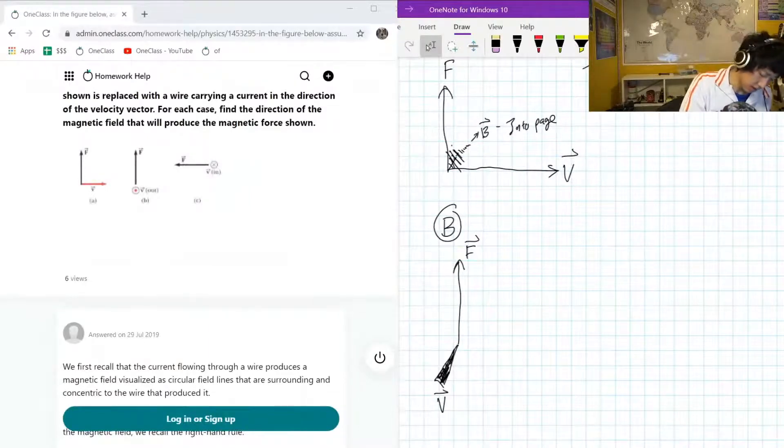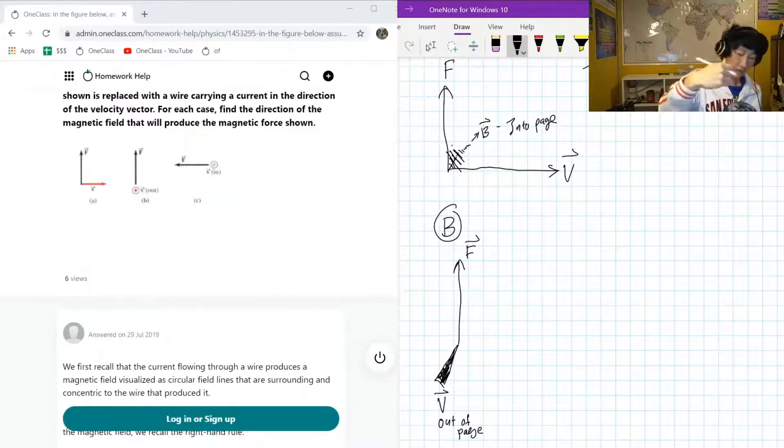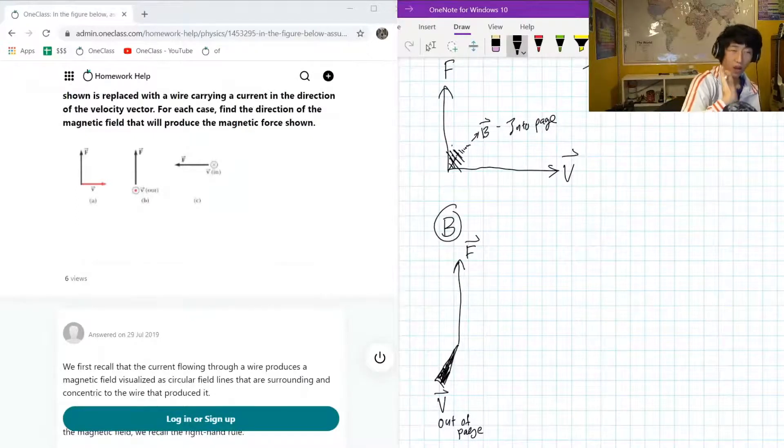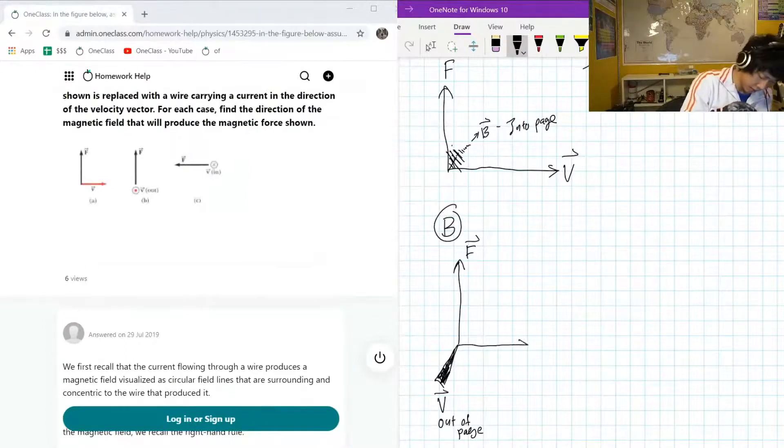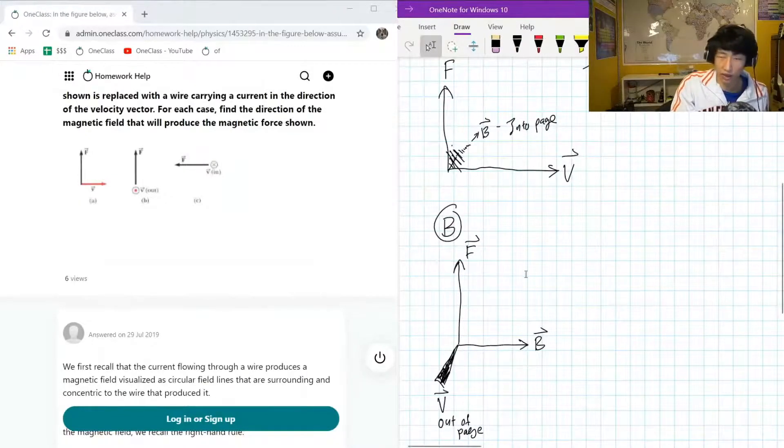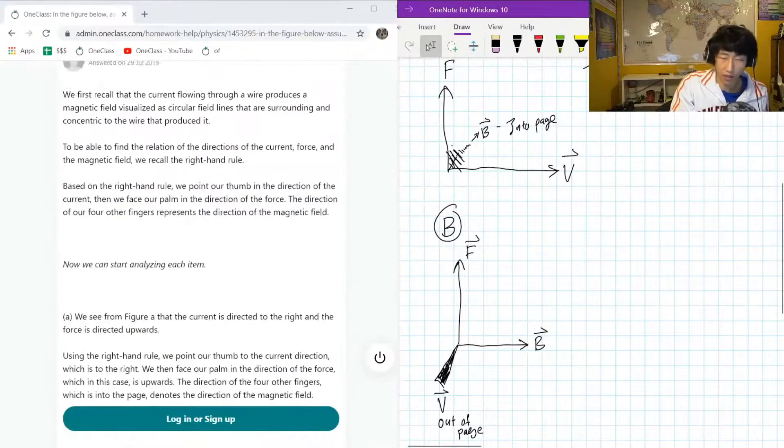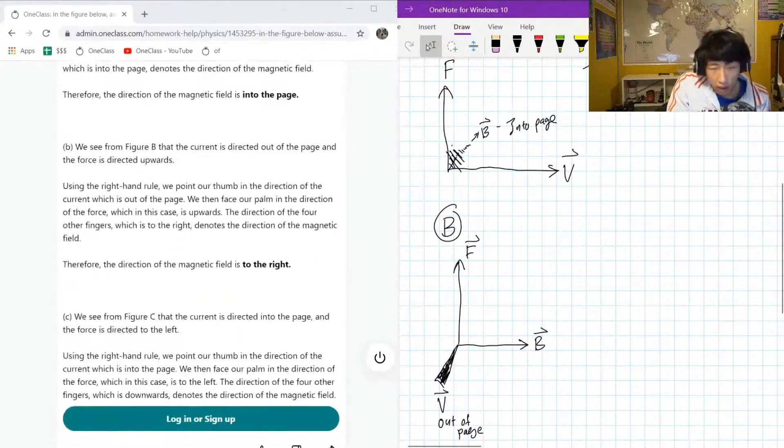So since this is coming out of page, with our V, our fingers coming out of the page, our thumb going upwards, our palm where our B is pointing has to be going towards the right. Our magnetic field is towards the right. Okay, so this would be our B situation. To the right. Awesome.